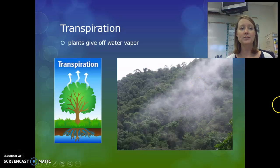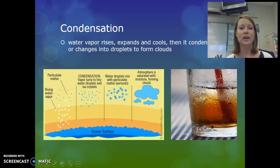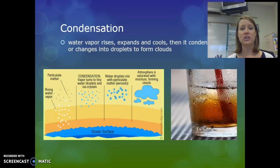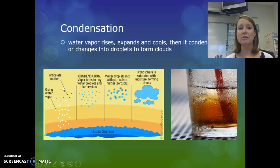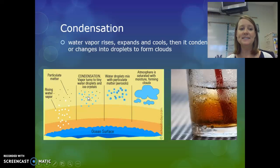As water evaporates, it also condenses to form clouds. Condensation is when the vapor, as it rises into the air, cools and then condenses. In order for water to condense, or change from vapor back into liquid, there has to be a drop in temperature and something for the water to condense on. In the atmosphere, that can be particulate matter such as dust, pollen, or solid pollutants. When the water changes into liquid, those droplets stick to that particulate matter, which we call condensation nuclei.